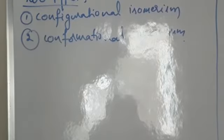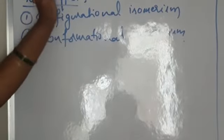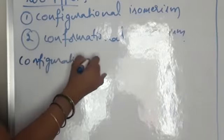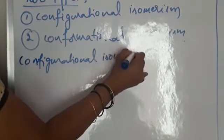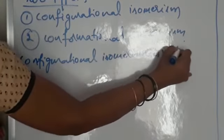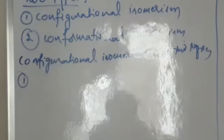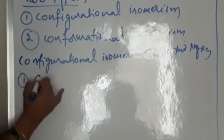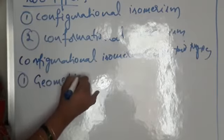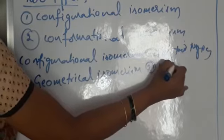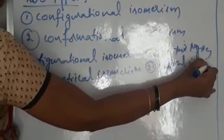Coming to configurational isomerism — configurational isomerism is again of two types: number one, geometrical isomerism, and number two, optical isomerism.